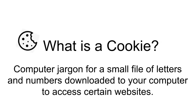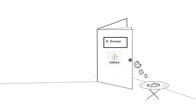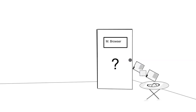What is a cookie? A cookie is computer jargon for a small file of letters and numbers downloaded to your computer to access certain websites. Like virtual door keys, cookies unlock a website to recognize users when they return to a site by opening doors. If the browser cannot read the cookie, the door will remain closed.